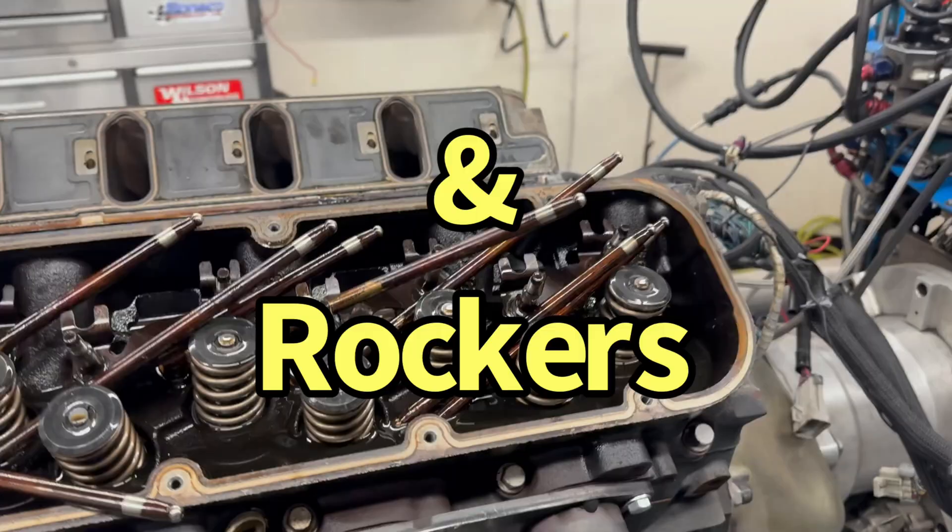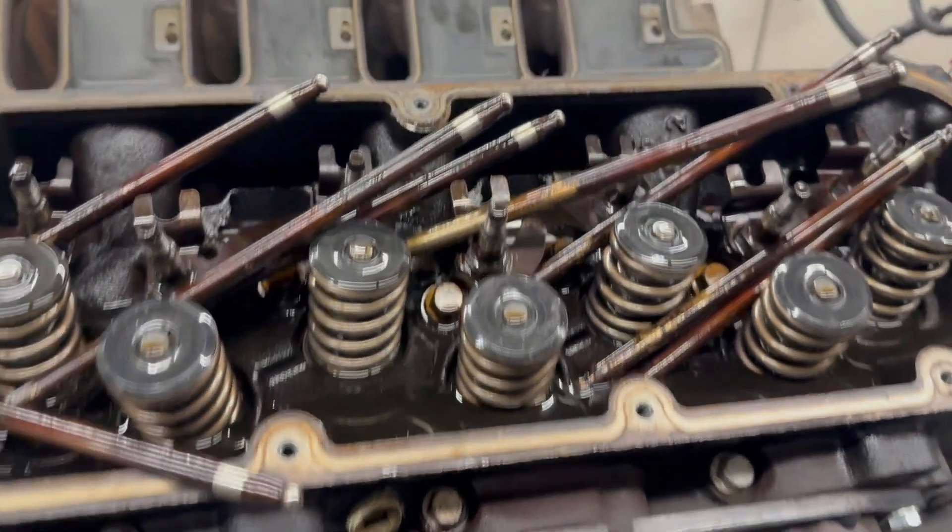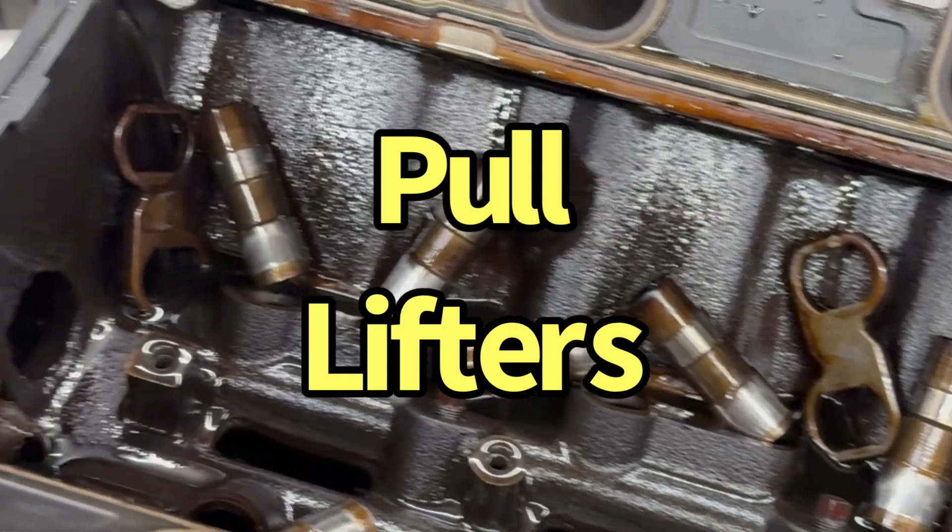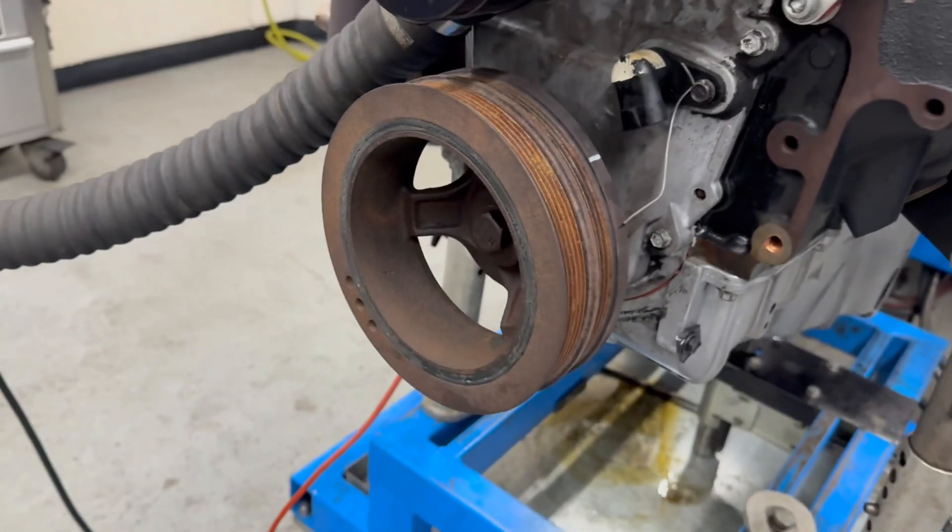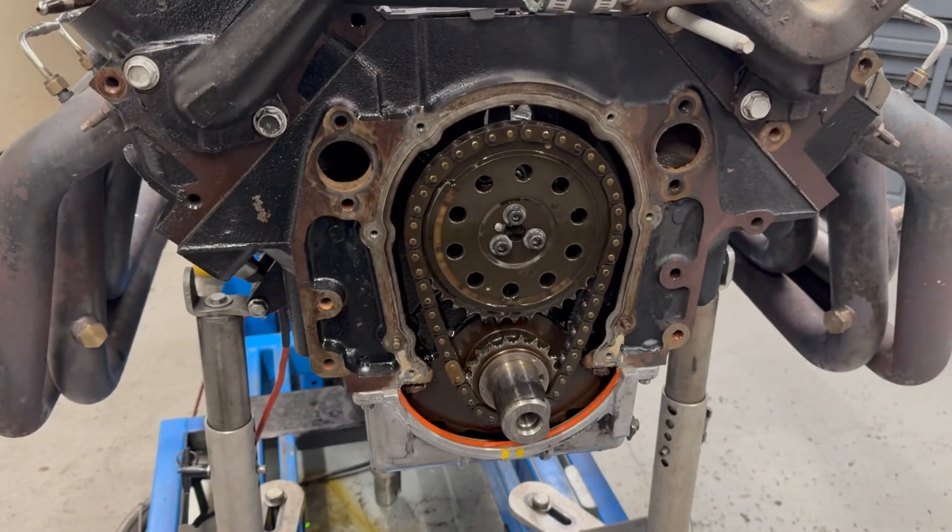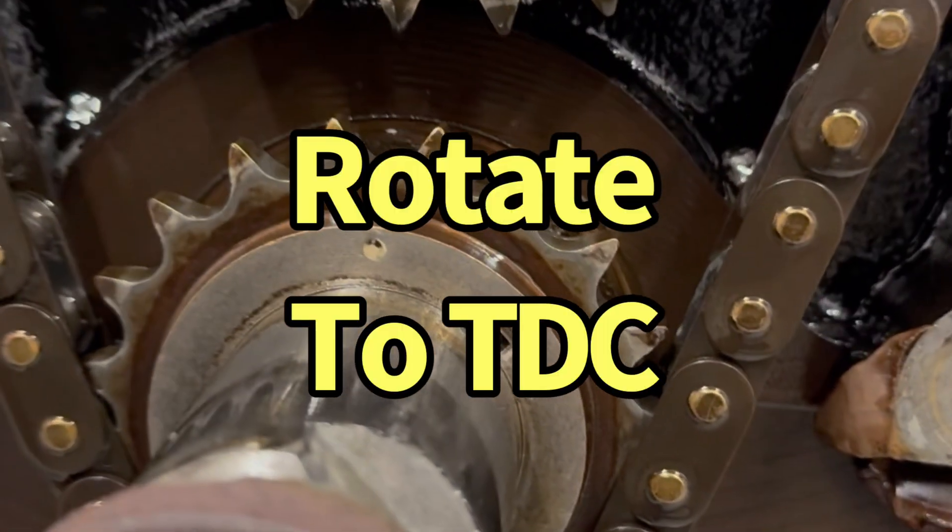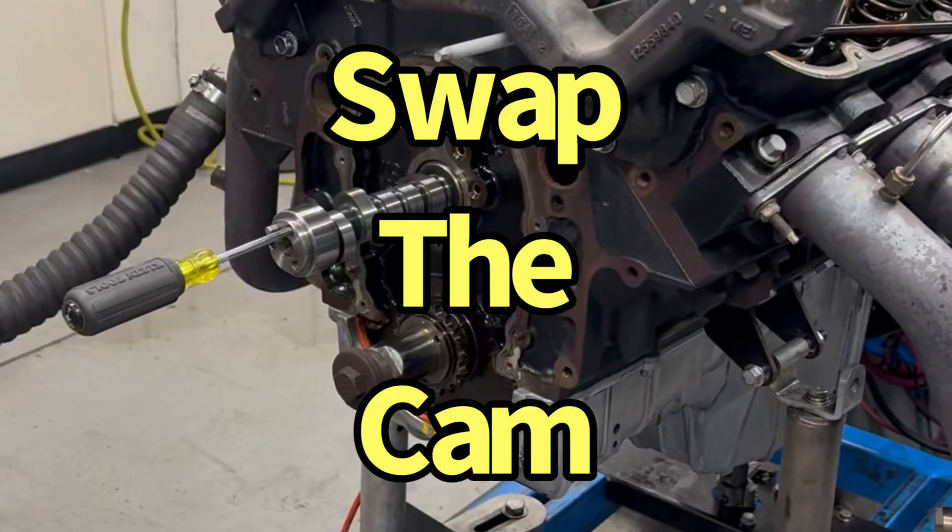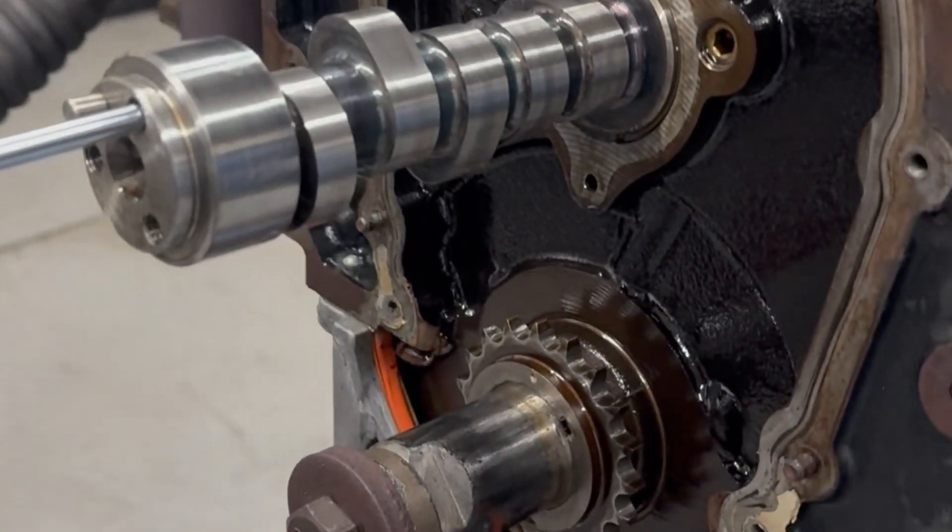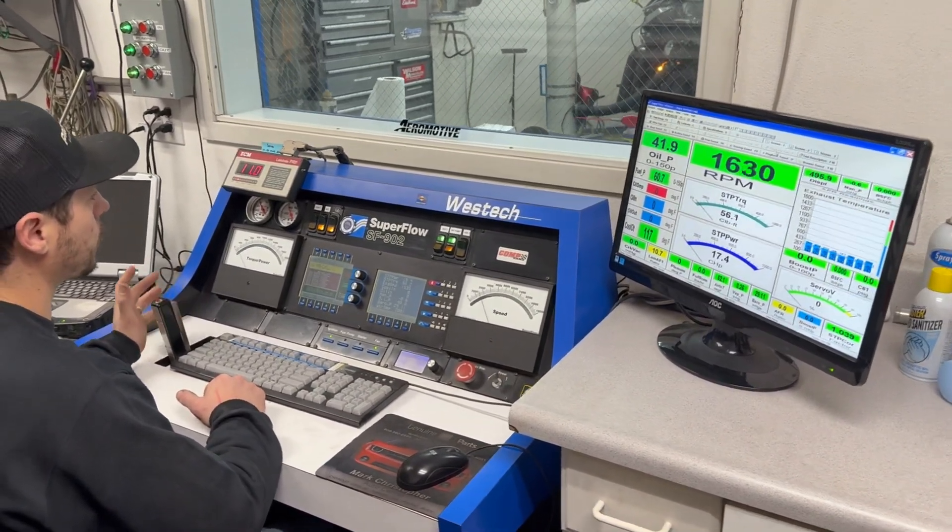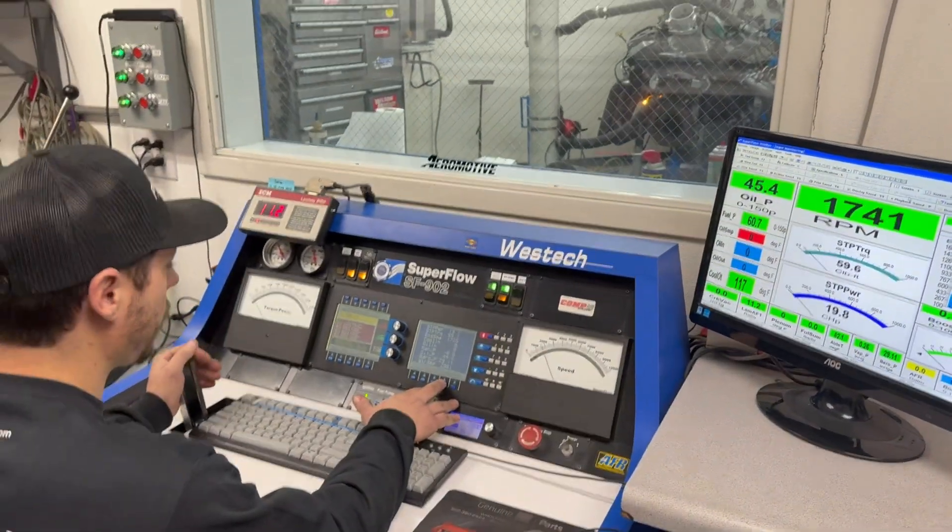We already had valve springs on this because we'd run the bigger camshaft in it. Just makes life easier. We'll just pull these up and get them out of the way. We'll just pull the water pump off, the dampener, front cover, and then we can swap the cam. Got the front cover off, now time to get the marks lined up. Make sure it has a little bit of throttle because it's going to idle at 1500 or whatever.